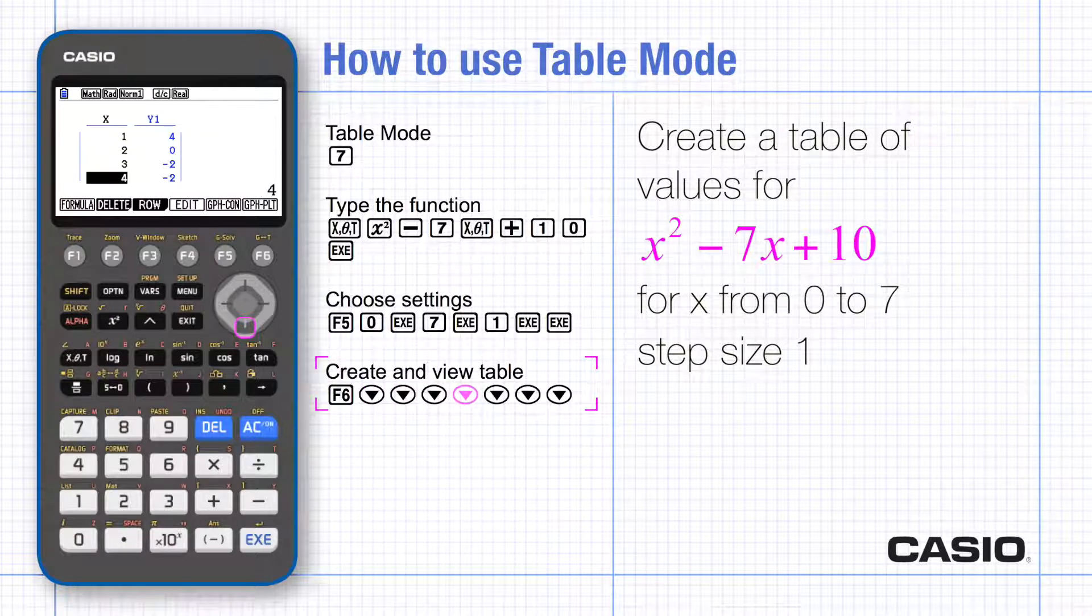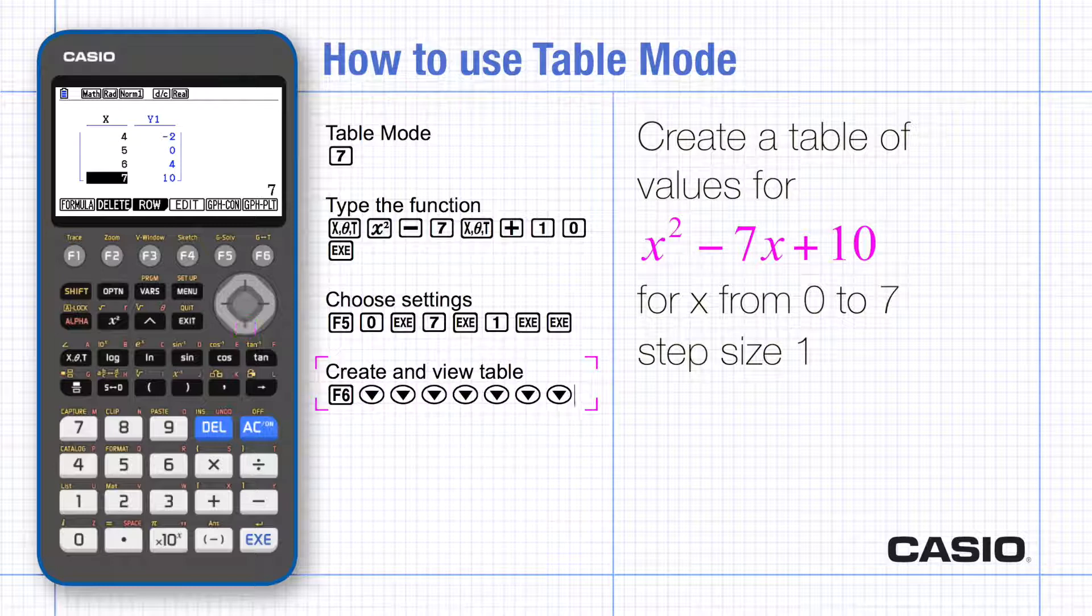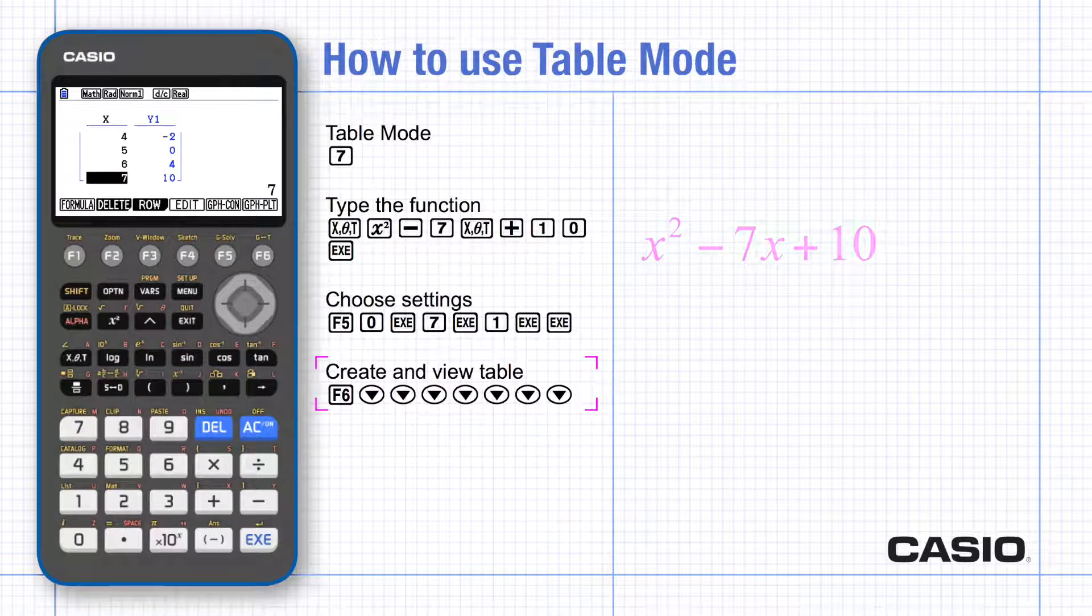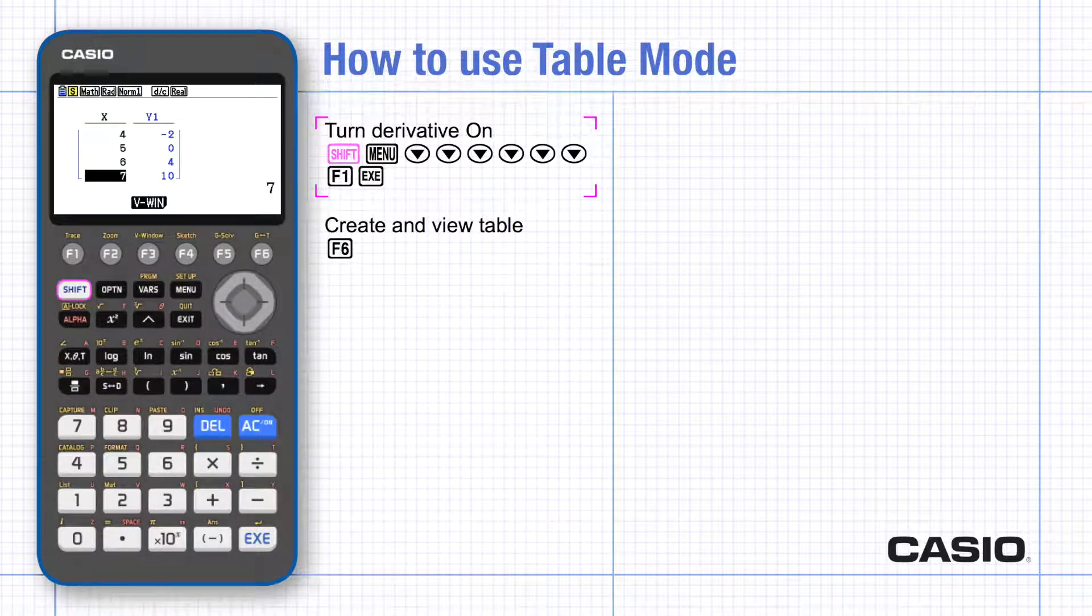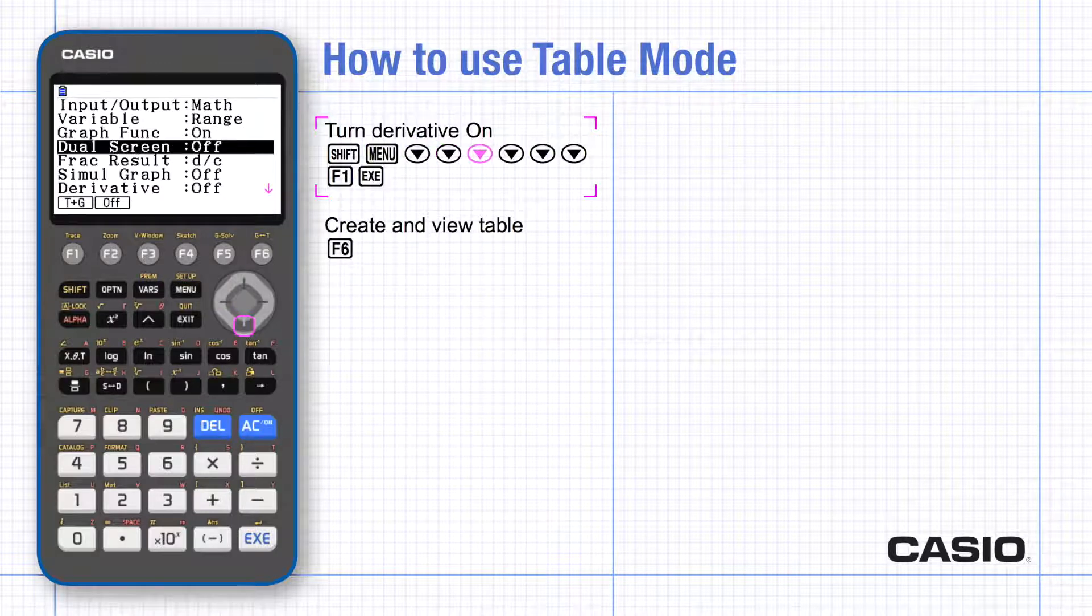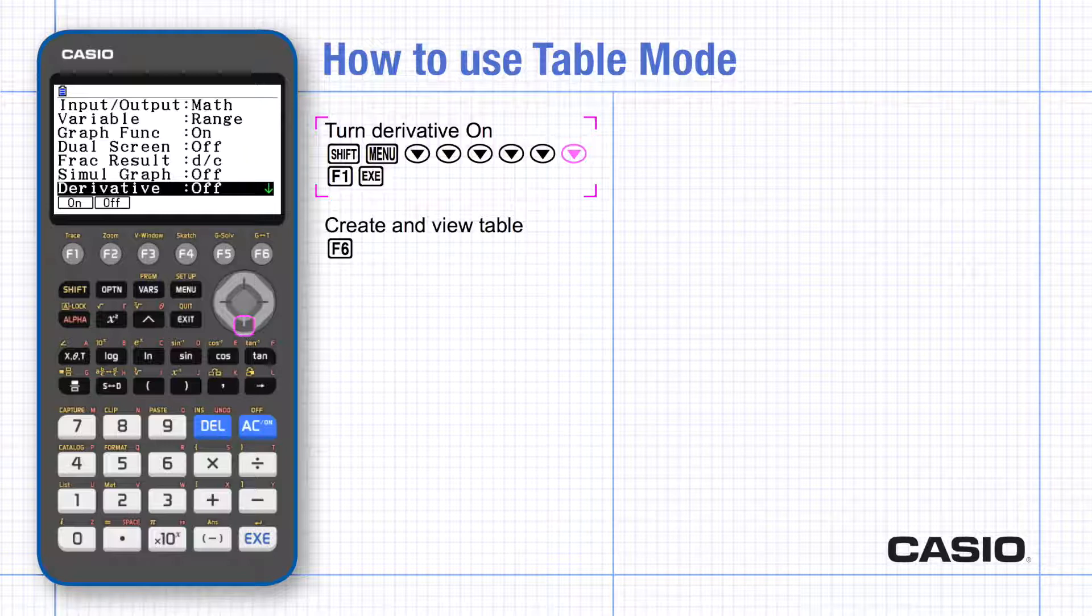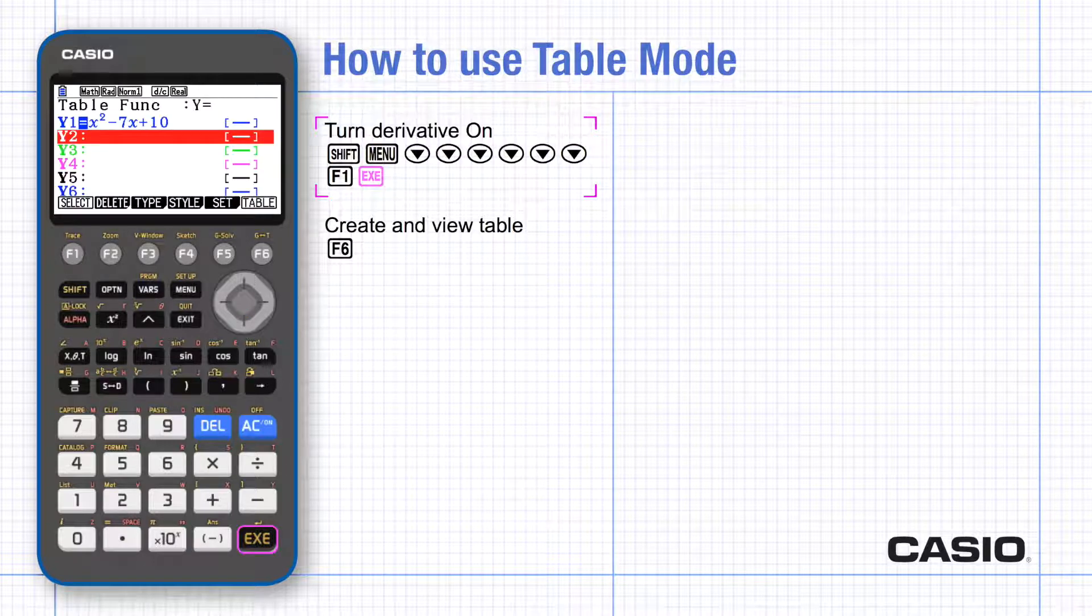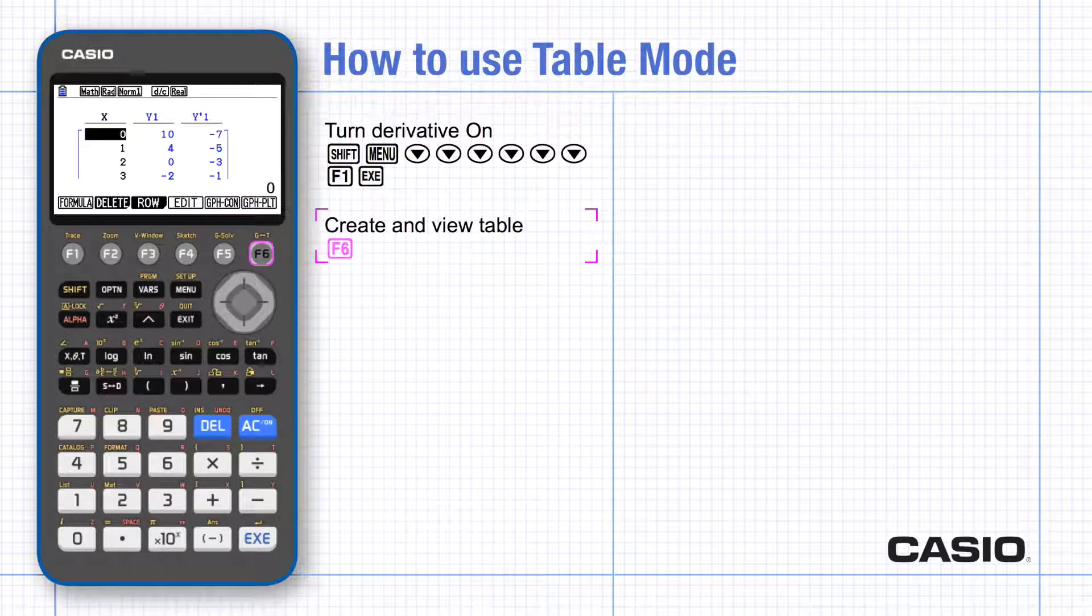Sometimes it's useful to see the value of the gradient at each point as well, so the gradient function can be switched on. Go to set up and then scroll down until you get as far as derivative and then choose on and execute. Now create the table of values and you'll see the derivative at each point is given in the third column.